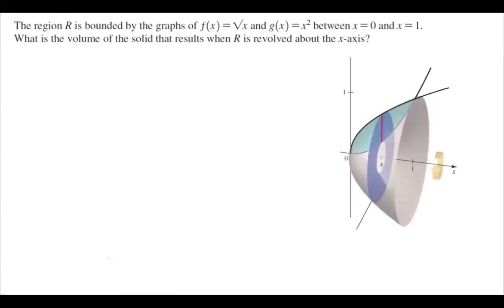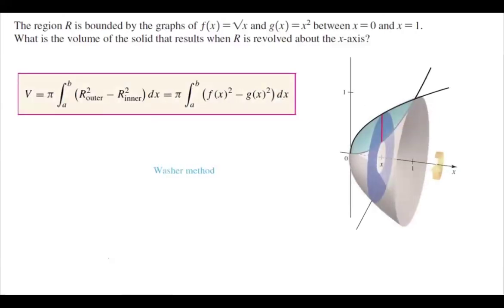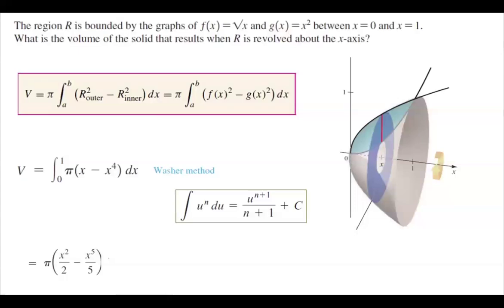Now that we have our object, we can find the volume using washer method. V is the definite integral from 0 to 1 of π(x - x⁴) dx. The rest is just using the techniques of integration: you get π times (x²/2 - x⁵/5), and x ranges between 0 and 1.